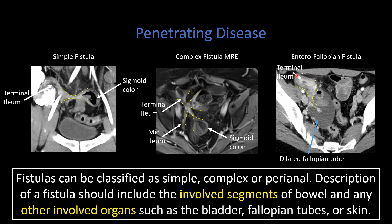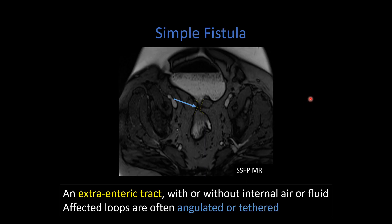On CT, we see a severely inflamed terminal ileum with tethering and communication with the fallopian tube, which is markedly dilated with fluid and inflamed. A simple fistula is defined as a single fistula between two hollow organs or a hollow organ and the skin — an extra-enteric tract going from an inflamed loop of bowel, typically through the mesentery, to another loop of bowel or hollow organ. You do not necessarily need to see air or fluid within the tract; often you see angulation or tethering of adjacent loops of bowel.